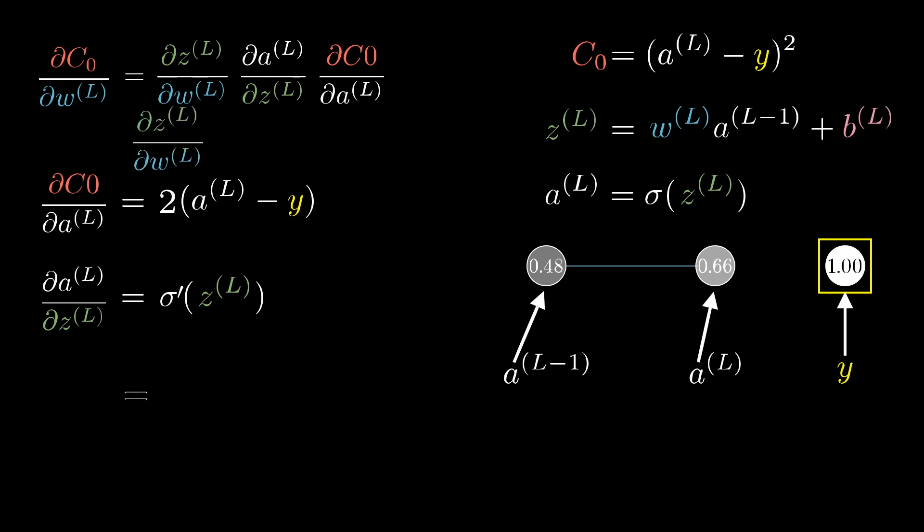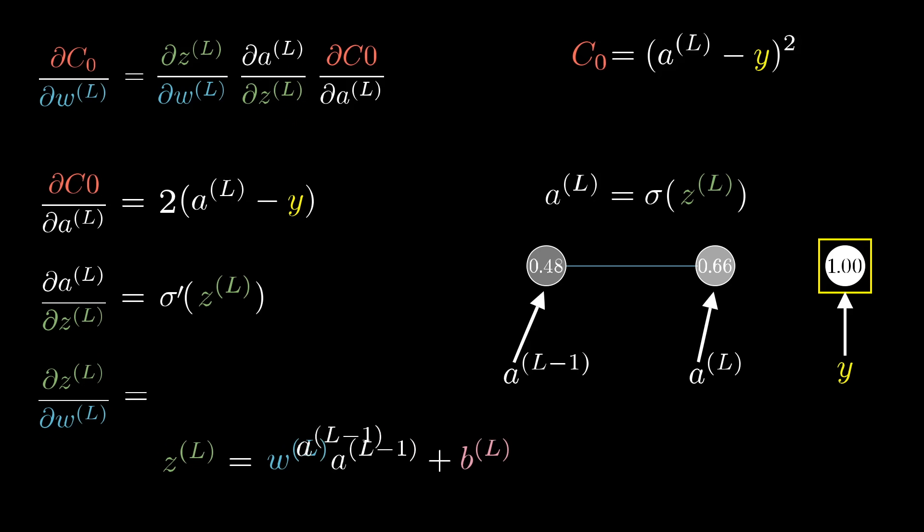And the derivative of z^l with respect to w^l, in this case, comes out just to be a^(l-1).